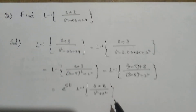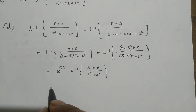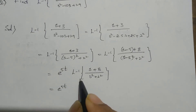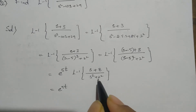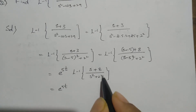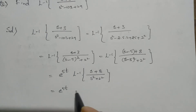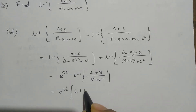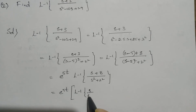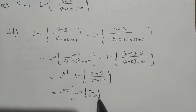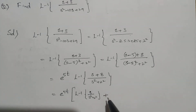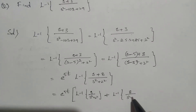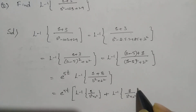This is equal to e to the power of 5t times L inverse of (s plus 8) divided by (s squared plus 2 squared). Directly we don't know, so you can split this: L inverse of s by (s squared plus 2 squared) plus 8 by (s squared plus 2 squared).